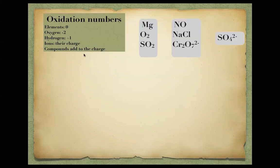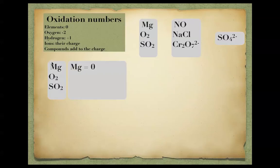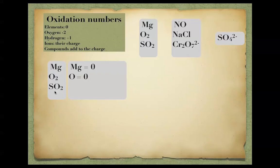Applying the rules: Magnesium as an element has an Oxidation number of 0. Elemental Oxygen (O₂) also has an Oxidation number of 0 because it is an element by itself, not -2. For Sulfur dioxide (SO₂), Oxygen is in a compound so it is -2; two Oxygens give -4 total; since the compound has no overall charge, Sulfur must be +4.